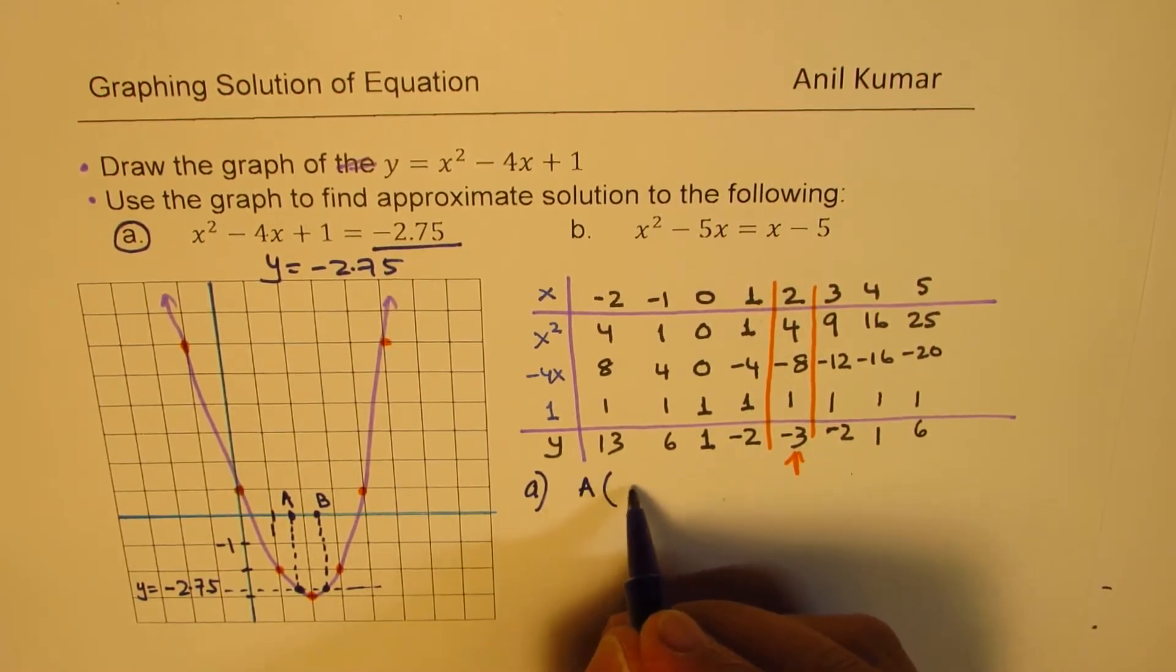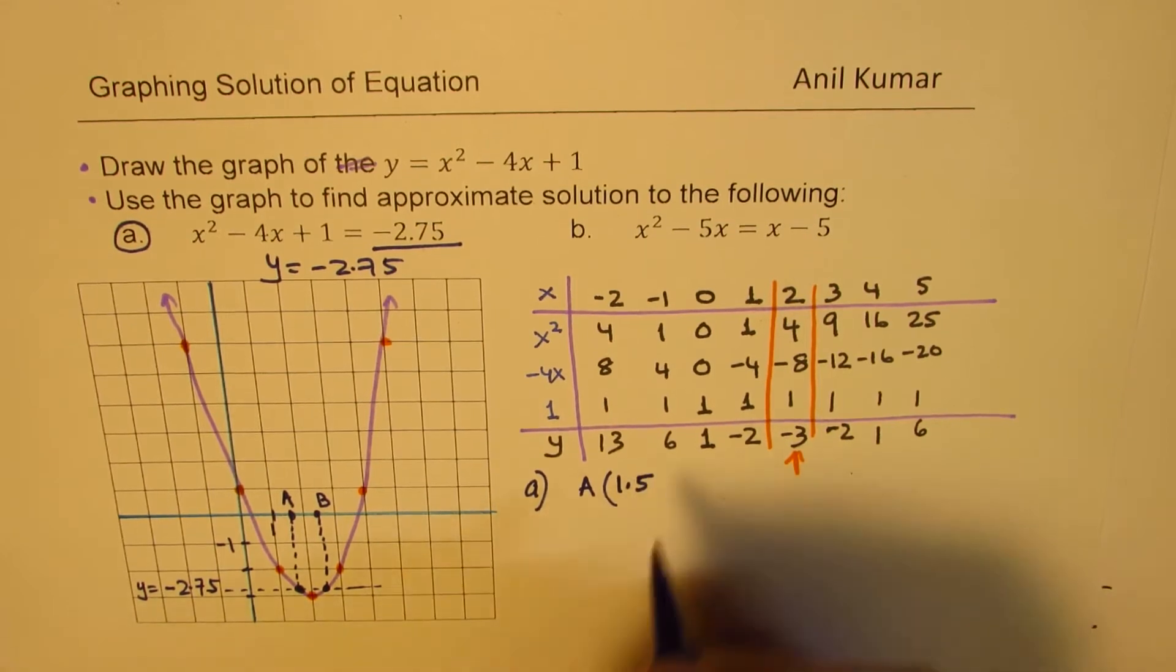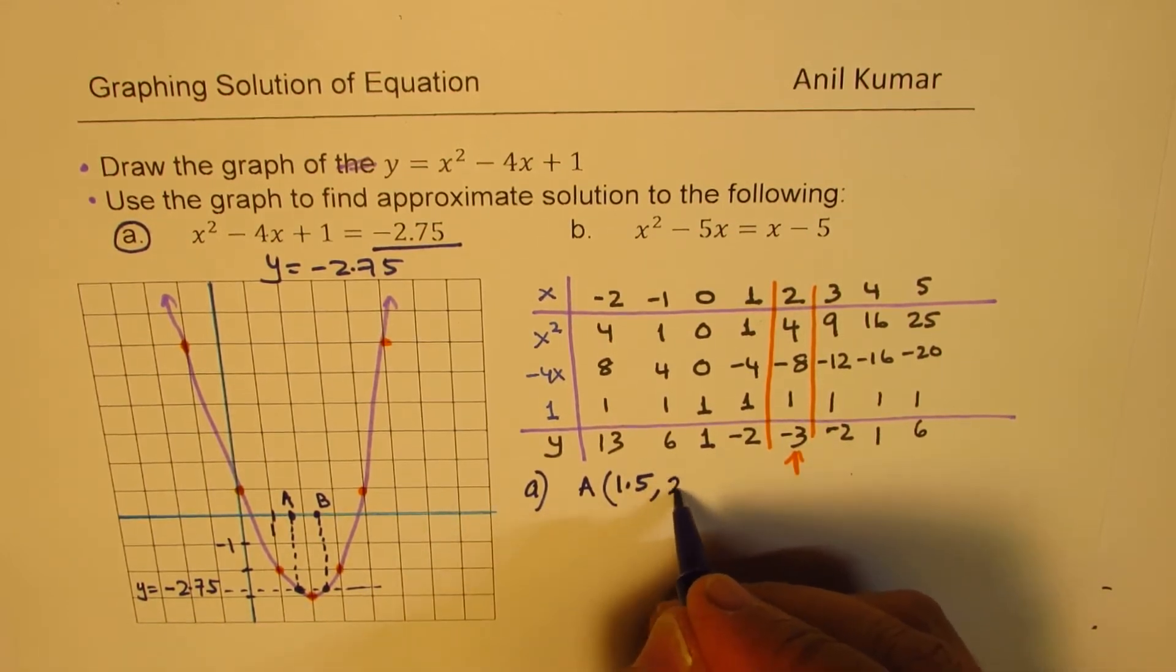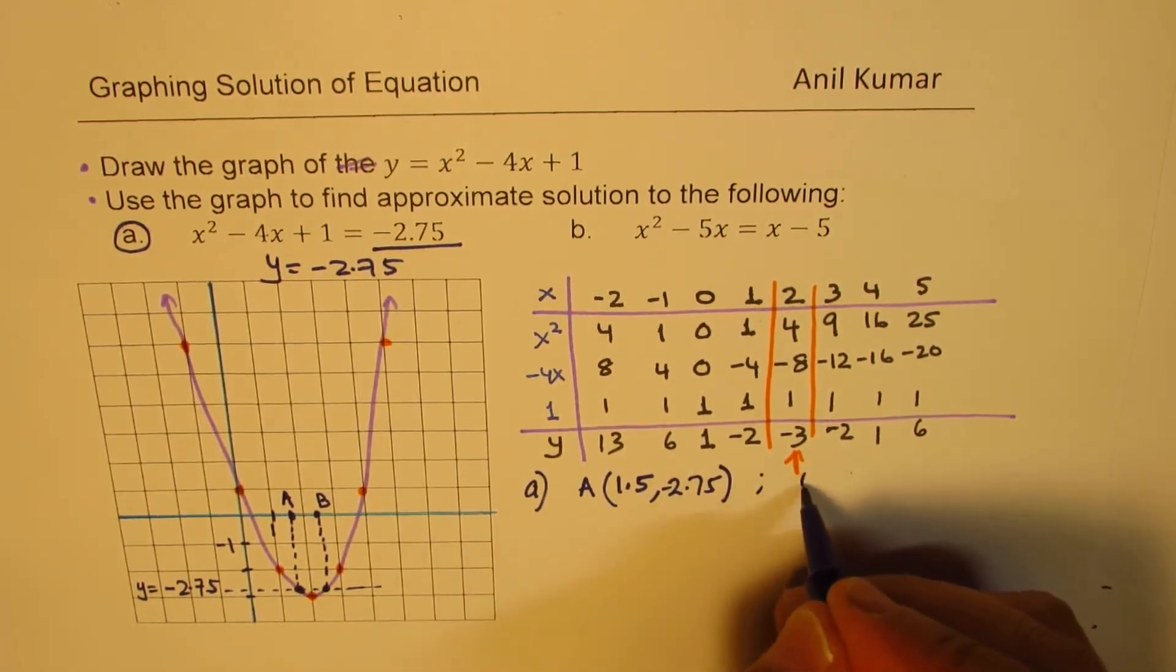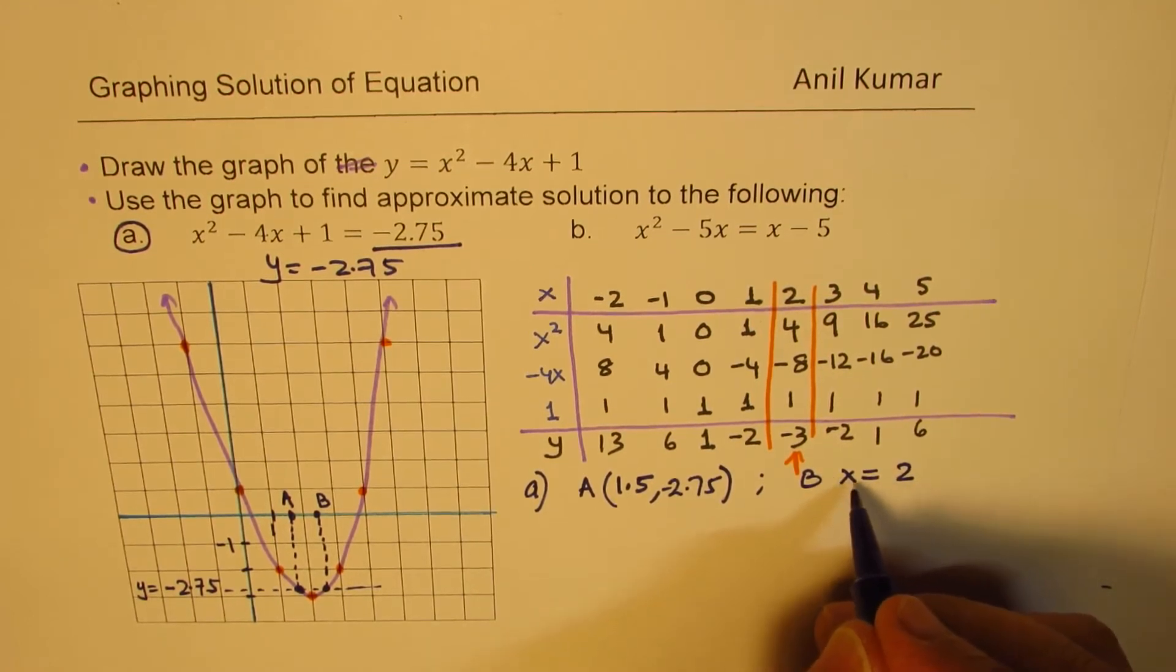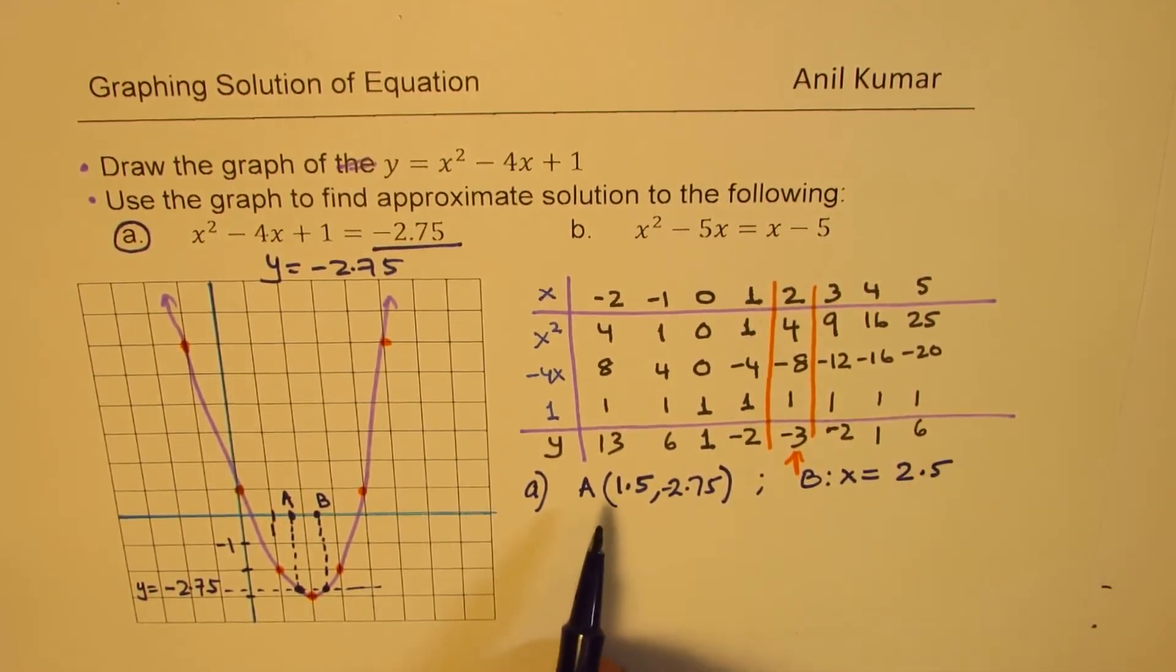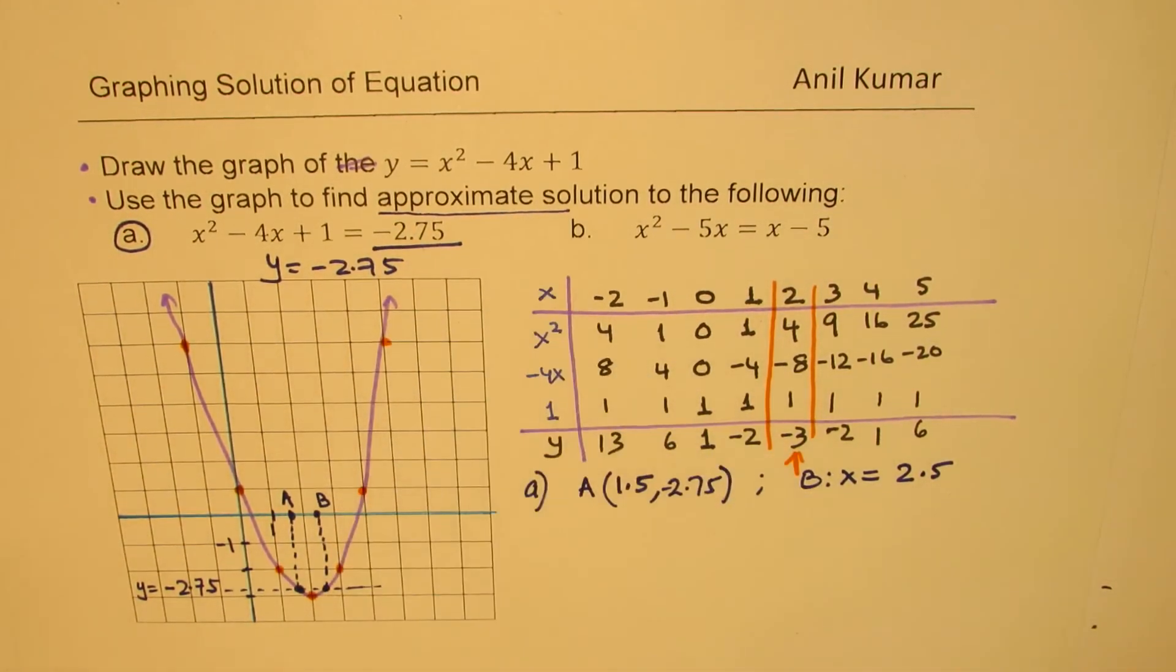So part a is, point a here is x value is 1 point, we can take it as 1.5. The y value, we'll assume this to be 2.75 negative. Okay, and b is at x equals, it's better to write x value, x equals 2.5. Is that clear? So the two solutions which we get are 1.5 and 2.5 from the graph. Now, these are always approximate values since from a graph, you can't really read very accurately.